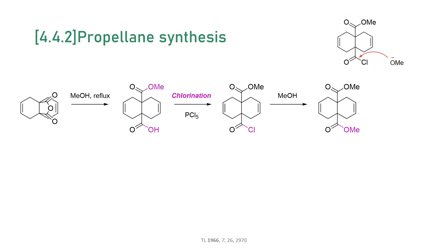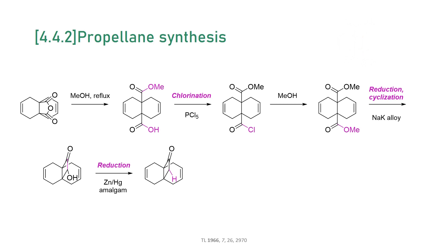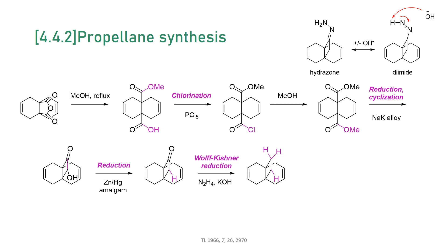To form the propellane framework, they had to create the third carbon ring, which they accomplished via a reductive cyclization, affording an alpha-hydroxy ketone. Stepwise reduction of the alcohol and the ketone removed the no longer necessary functional groups. With this intermediate in hand, they produced a saturated 4-4-2-propellane by simple hydrogenation.